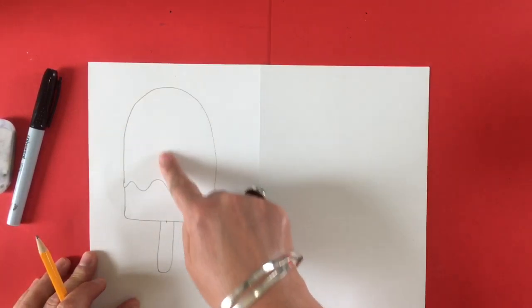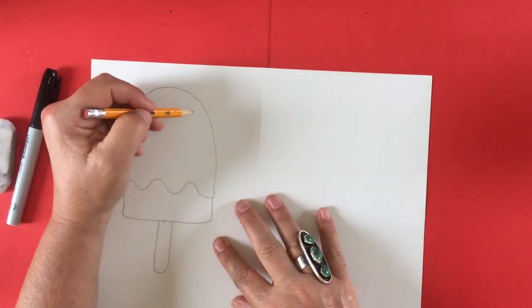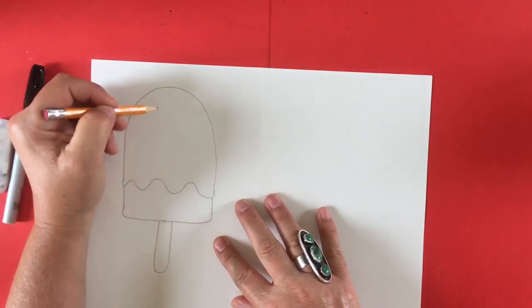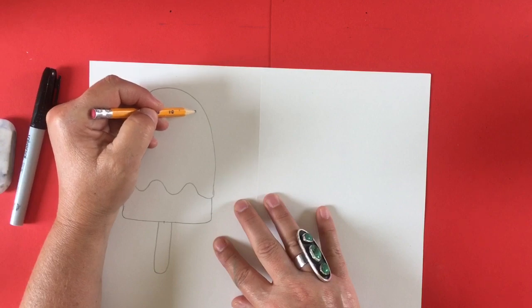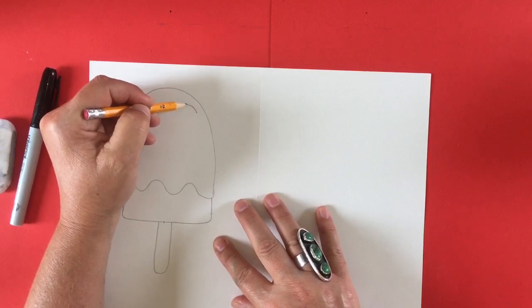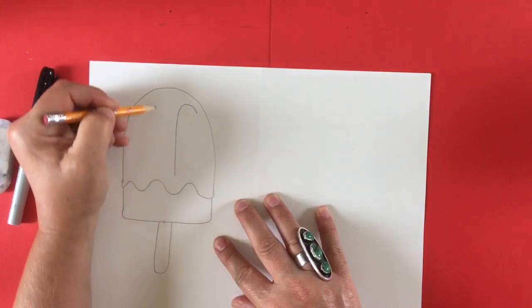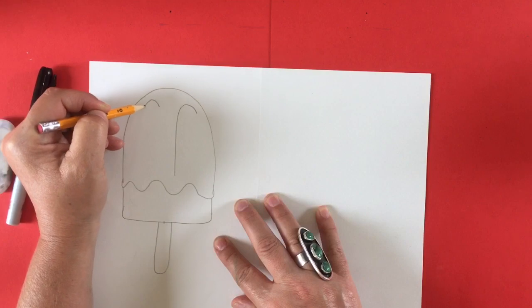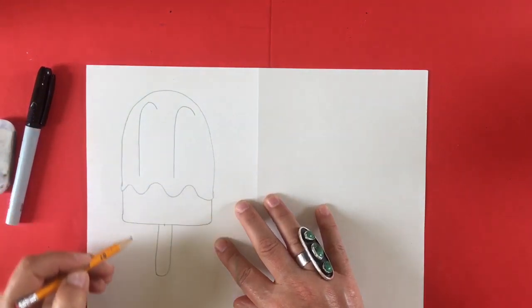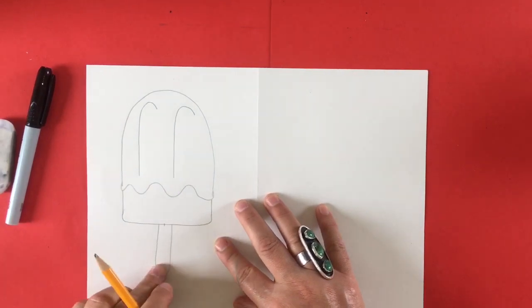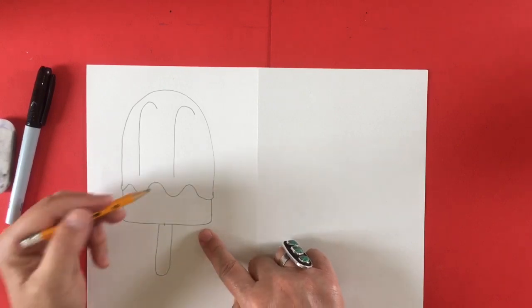Now I'm going to give my popsicle a little bit of depth by drawing some lines on it that are curved at the top and then go straight down. I made two of these going around and down kind of like a candy cane. You're going to make two candy cane lines that go around and down, and that makes it look like the popsicle is not flat. It gives it a little dimension meaning it looks like it's going to come off the paper.